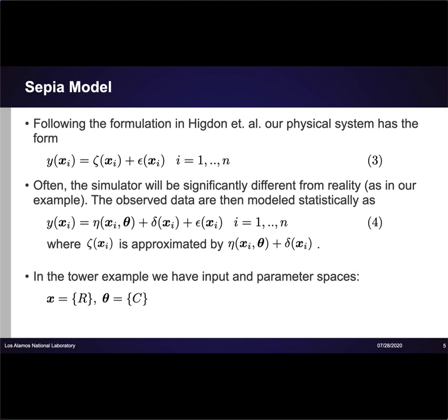Let's talk a little bit about how sepia creates emulators and models discrepancy. Following the formulation in Higdon, our physical system looks like equation 3. The observed values y are a function zeta of the controllable experimental conditions x plus observation error epsilon, which could also be dependent on experimental conditions. We approximate the zeta function with an emulator eta and a discrepancy delta. Eta will be dependent on x, as well as unknown simulation parameters theta, which we want to learn. As we've mentioned, simulations will often be significantly different from reality, which is why delta is important. Delta can also be different at every experimental condition x. In the tower example, our experimental conditions are the ball radius, r, and our single parameter of interest is c, the coefficient of drag.